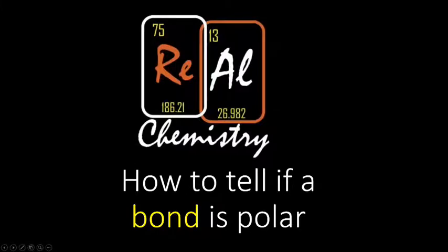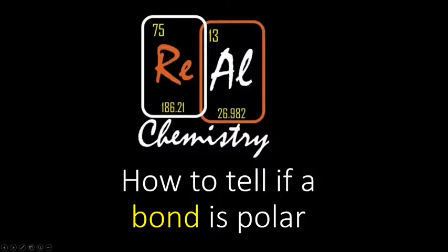Welcome to this episode of Real Chemistry. This is the first part in a three-part series on how to tell if a molecule is polar. In this first part, we're just going to look at if a bond is polar. In this video, we'll first look at what it means for a bond to be polar, and then we'll do some practice problems on how to tell if it's polar, nonpolar, or in some cases, ionic.